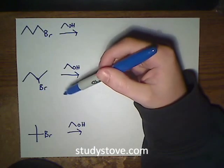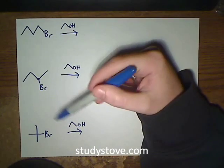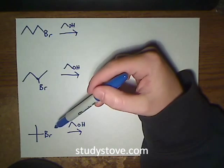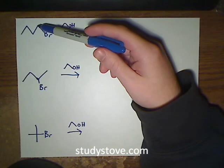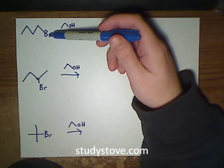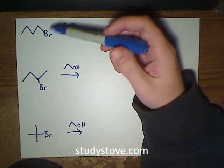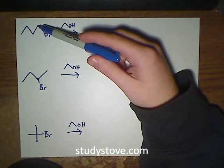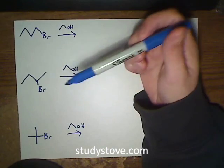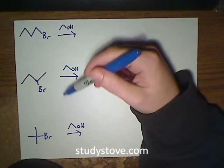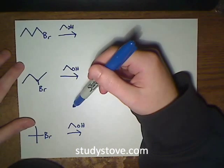This question is asking to provide the major products for the following reactions, and the thing to point out here is we have these haloalkanes, so we have an electrophilic carbon with a good leaving group. There's a trend here: we have a primary carbon with a good leaving group, then a secondary carbon, and then a tertiary carbon, and we are reacting with ethanol in all three cases.